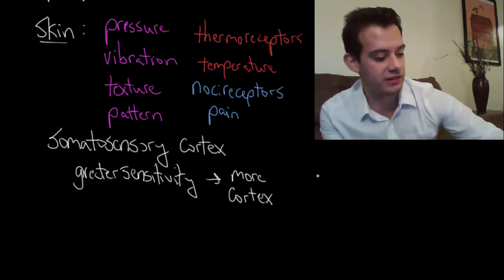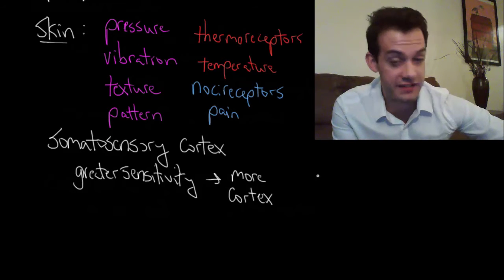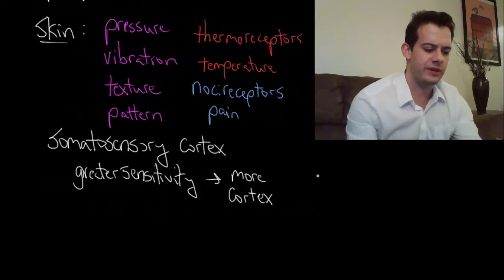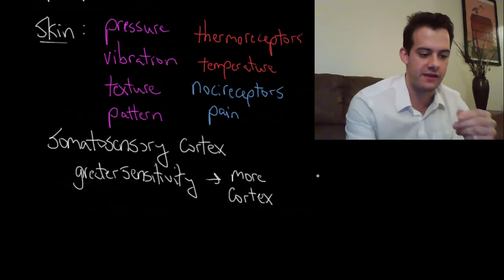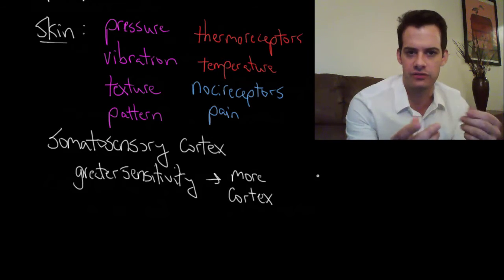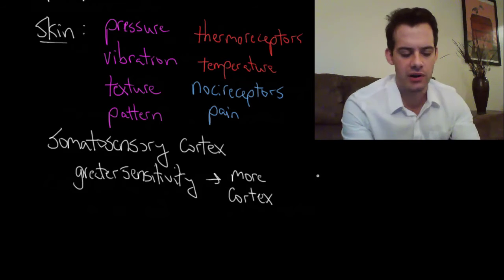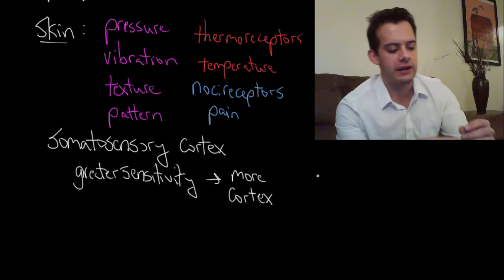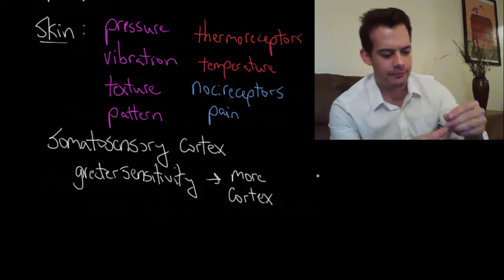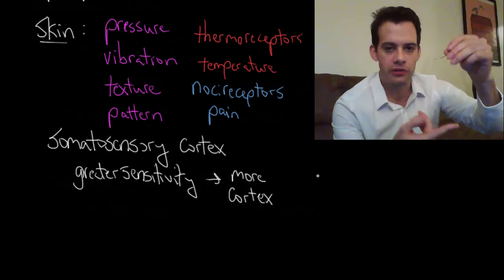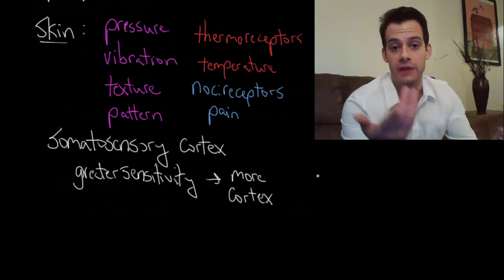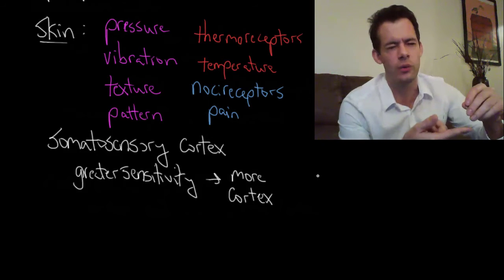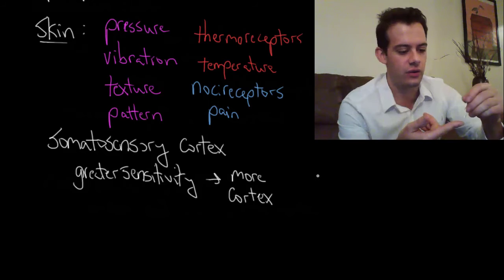You can actually demonstrate this. You can demonstrate these different regions of sensitivity in your skin with a test like this. So you get two little points. In this case I've straightened out two pairs. You can use two paper clips. You can use two sharpened pencils or something. And you need a partner for this. And what you want to do is you're going to take turns poking each other either with both of the points at once or with just one of the points. And you have to close your eyes. And you try to guess was that two points or just one.